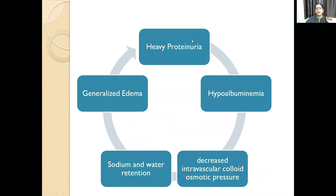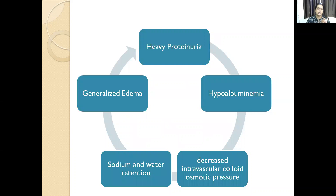In nephrotic syndrome there should be five things: one is heavy proteinuria — more than 3.5 grams per 24 hours — hyperlipidemia, hypoproteinemia, lipiduria, and severe edema.